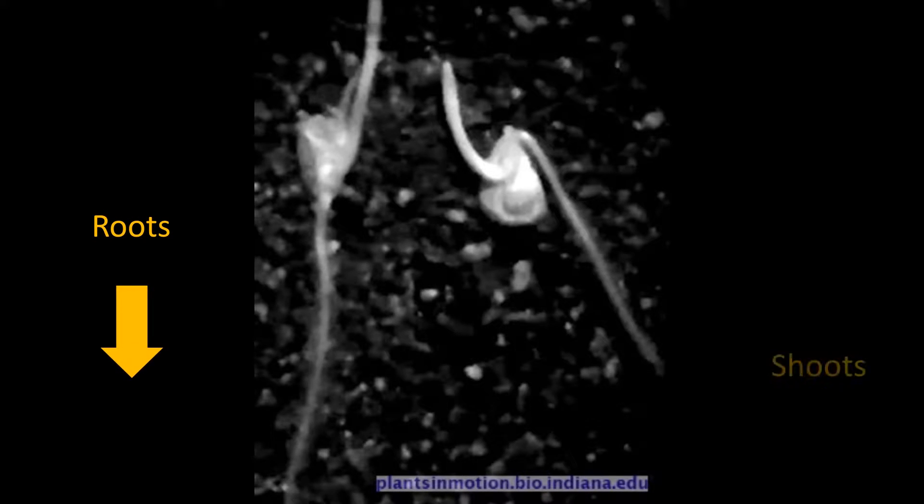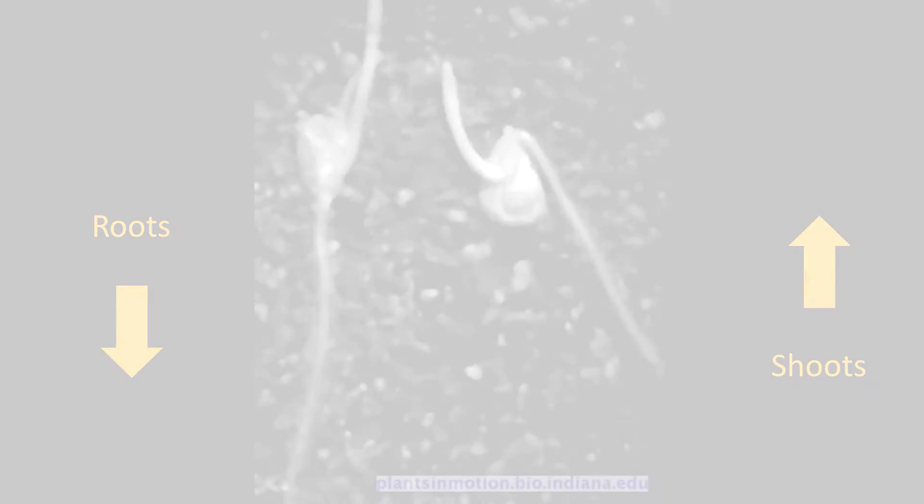Roots will always grow downwards, whereas shoots always find their way up. But how does the plant know which way is up and down?